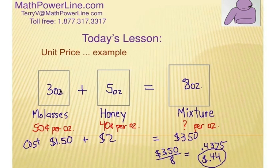So we want to basically find the total cost and the total amounts, and then we have to come up with a unit price. So let's try this example.